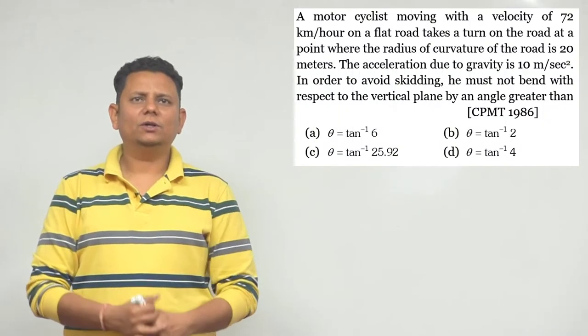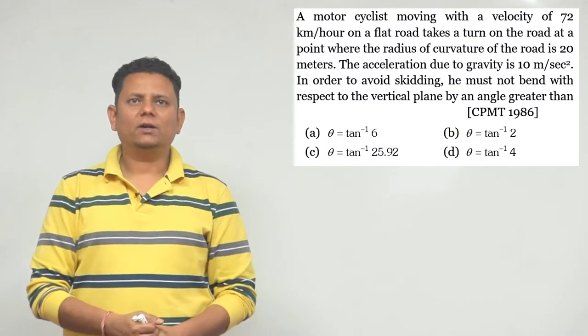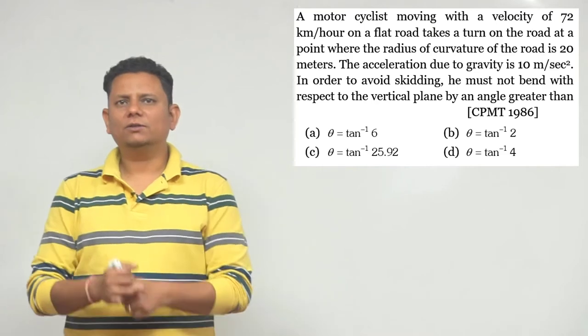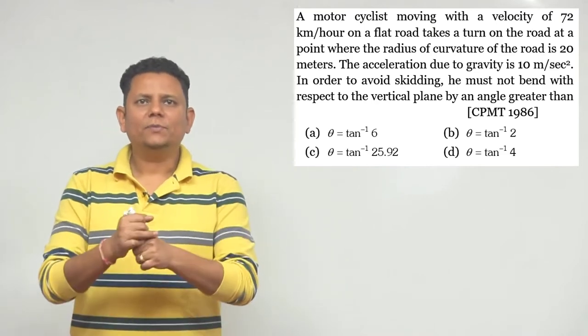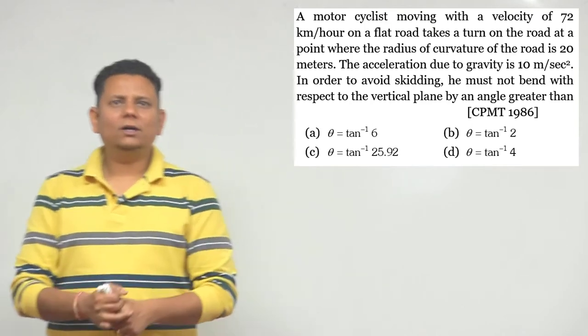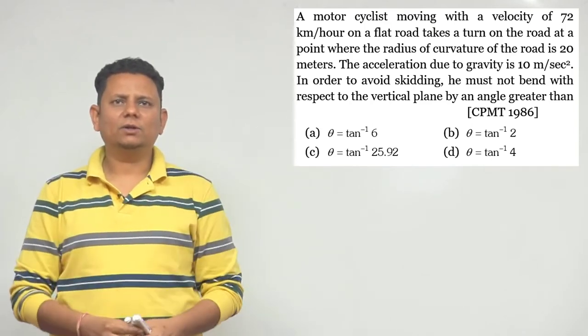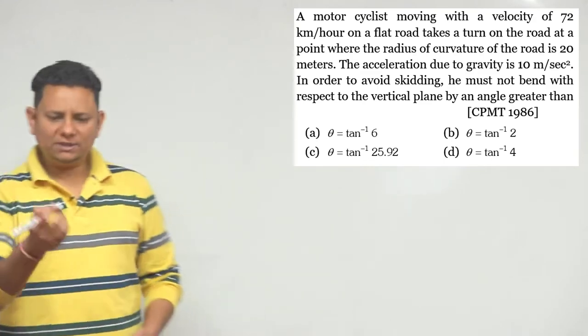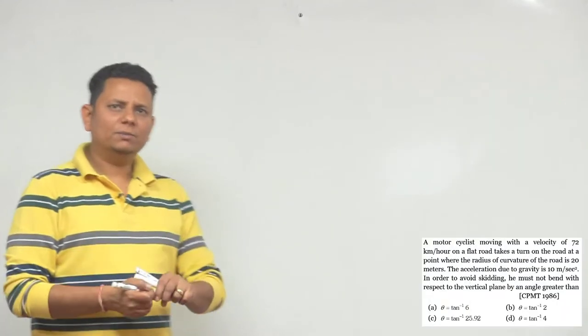Next question: A motorcyclist moving with a velocity of 72 km/hour on a flat road makes a turn on the road at a point where the radius of curvature of the road is 20 meters. The acceleration due to gravity is 10 meters per second squared. In order to avoid skidding, he must not bend with respect to the vertical plane by an angle greater than a certain value. Four angles are given as answer choices. This is a very simple question.